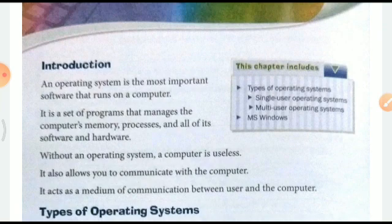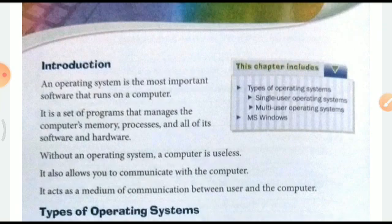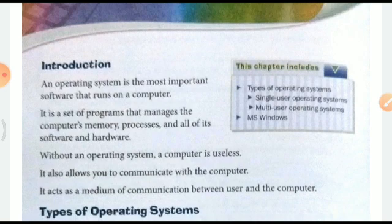An operating system is the most important software that runs on a computer. It is a set of programs that manages the computer memory, processes, and all of the software and hardware. Without an operating system, a computer is useless. It allows you to communicate with the computer, acting as a medium of communication between the user and the computer, ensuring everything is working properly.